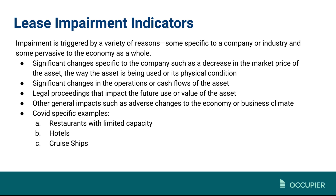Here are some impairment indicators. This could happen for a ton of reasons — good things or bad things happening in the company, or even just changing the nature of how you're using an asset. For example, if you're changing your corporate office location from New York City to St. Louis to save money, you may have a problem because you still have a five-year lease on that New York City office.